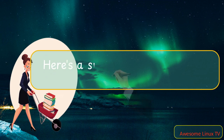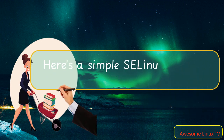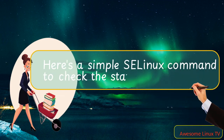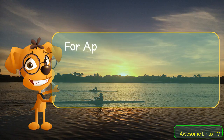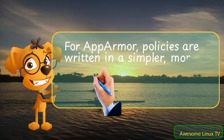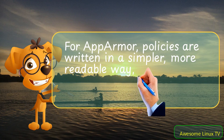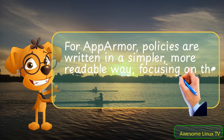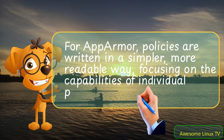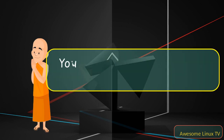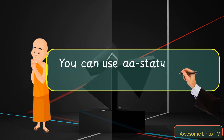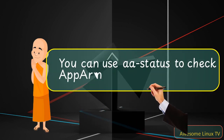Here's a simple SELinux command to check the status: sestatus. For AppArmor, policies are written in a simpler, more readable way, focusing on the capabilities of individual programs. You can use aa-status to check AppArmor's status.